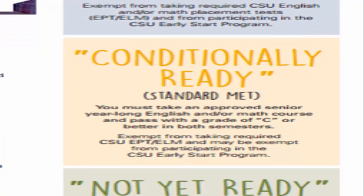If you are conditionally ready, it means that you must take an approved senior year-long English and/or math course and pass with a grade of C or better in both semesters. Talk to your counselor to find out what the 12th grade level acceptable courses are. As long as you pass one of those acceptable classes, you will not have to take the placement exams or participate in the CSU Early Start program.